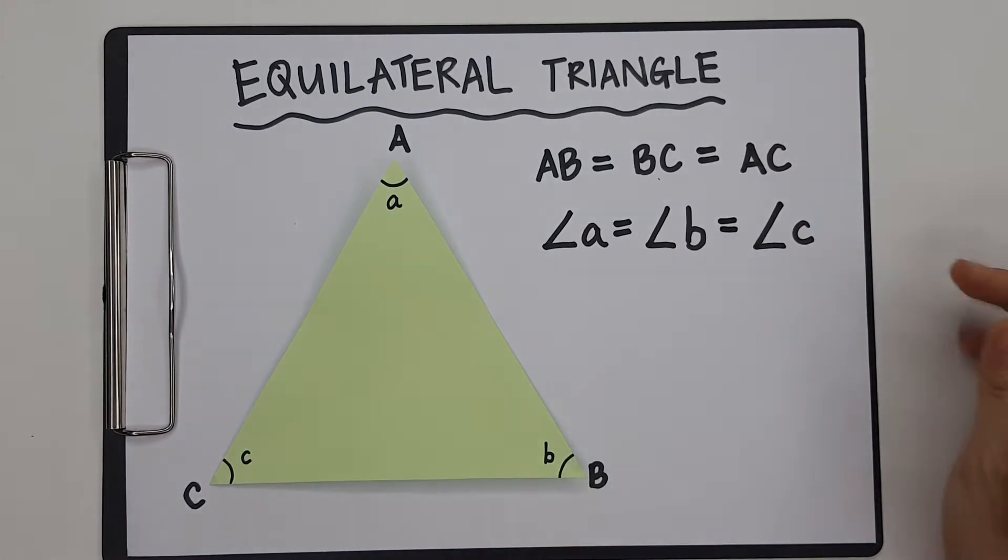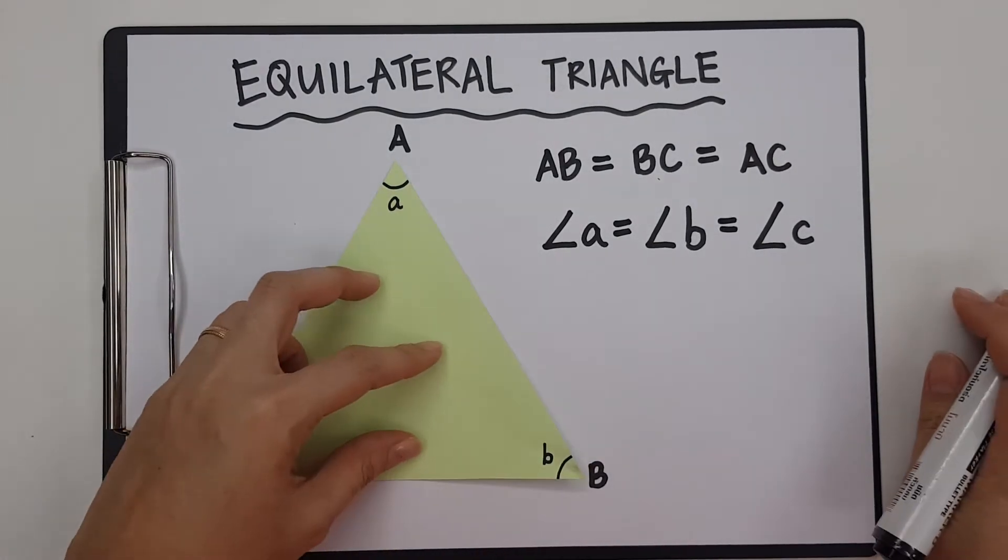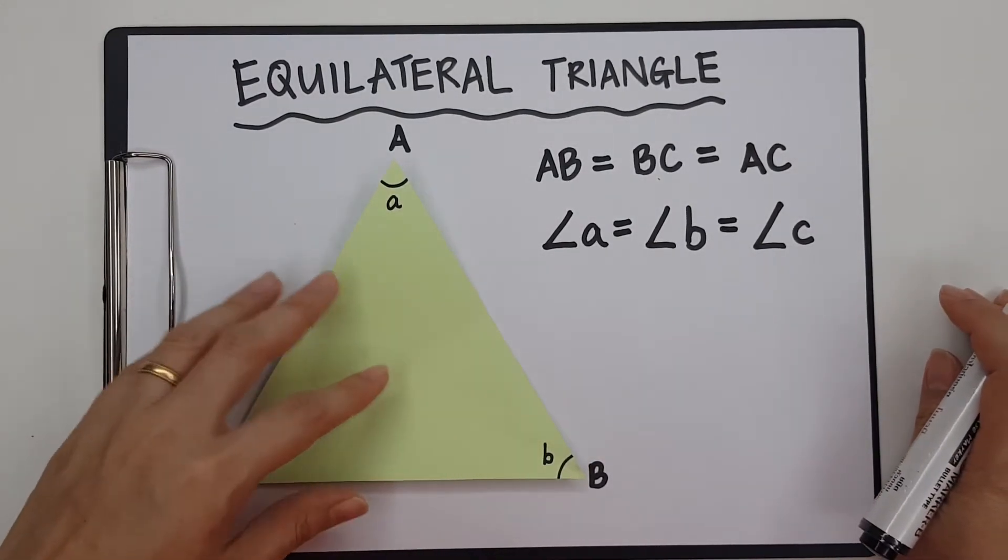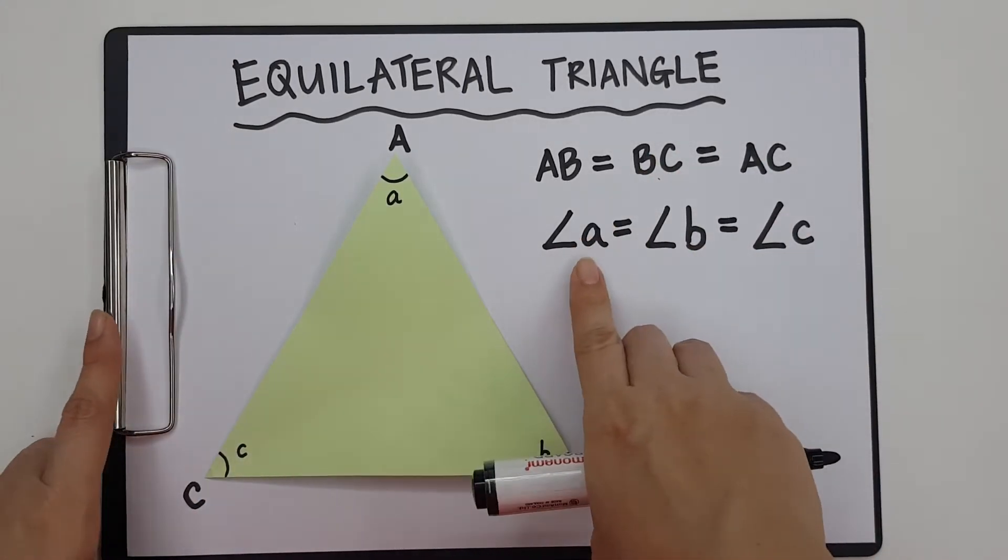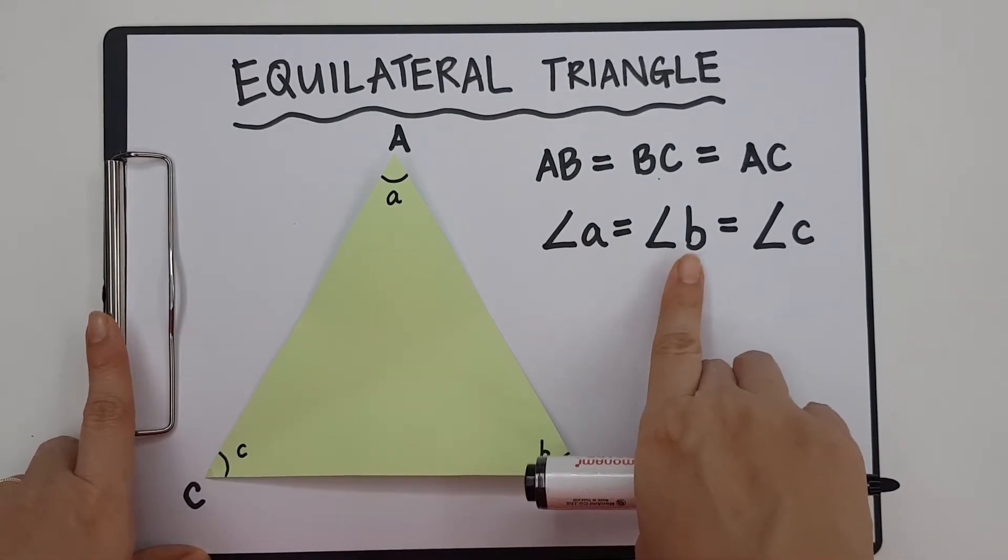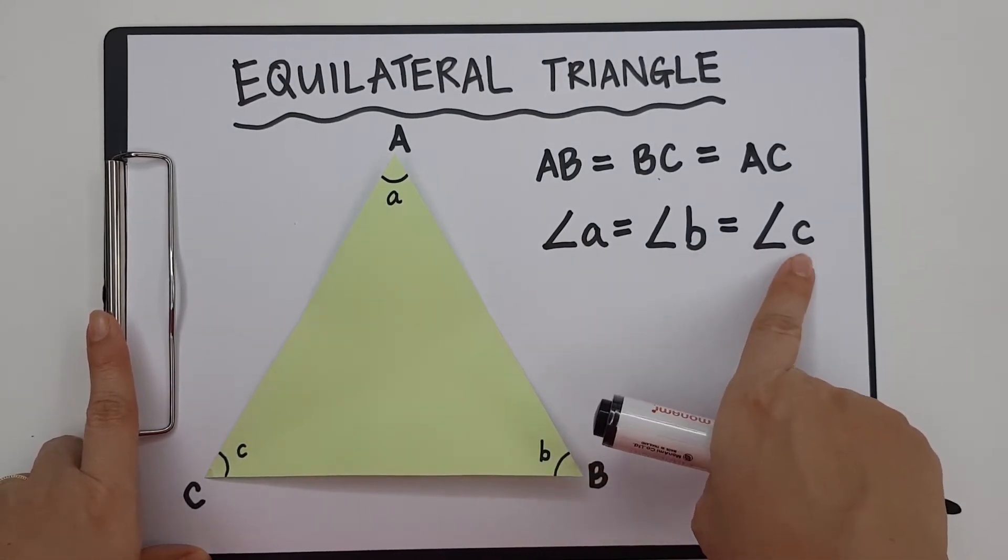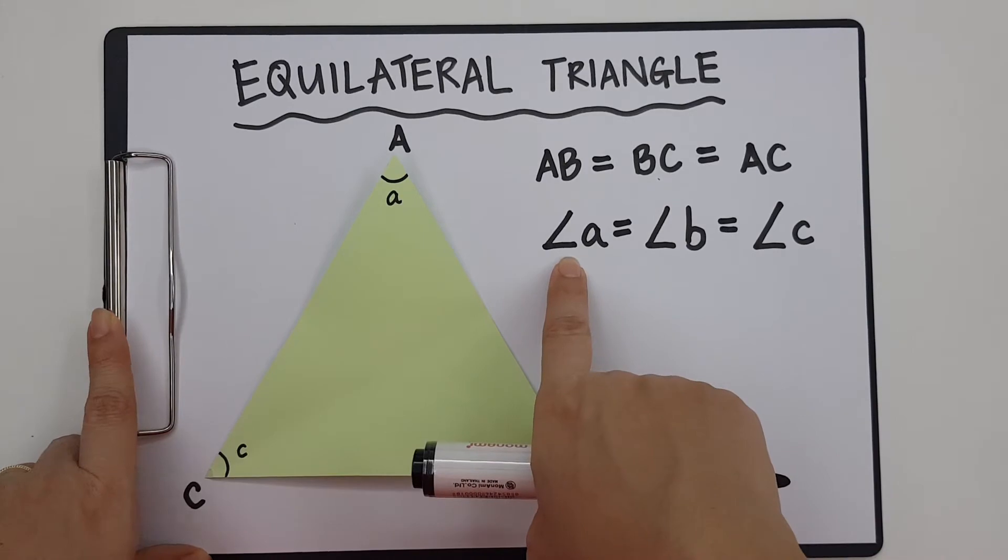Now this is the second property of an equilateral triangle. All the angles are the same. Now, when we measure angles, we measure in degrees. Just a short mention. If A equals to B and B equals to C, that means angle C is also the same as angle A.